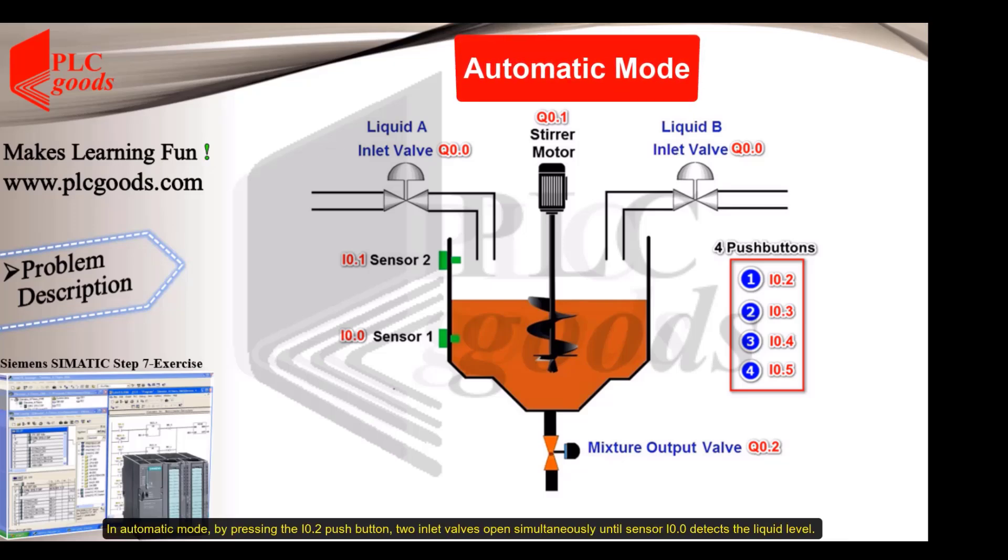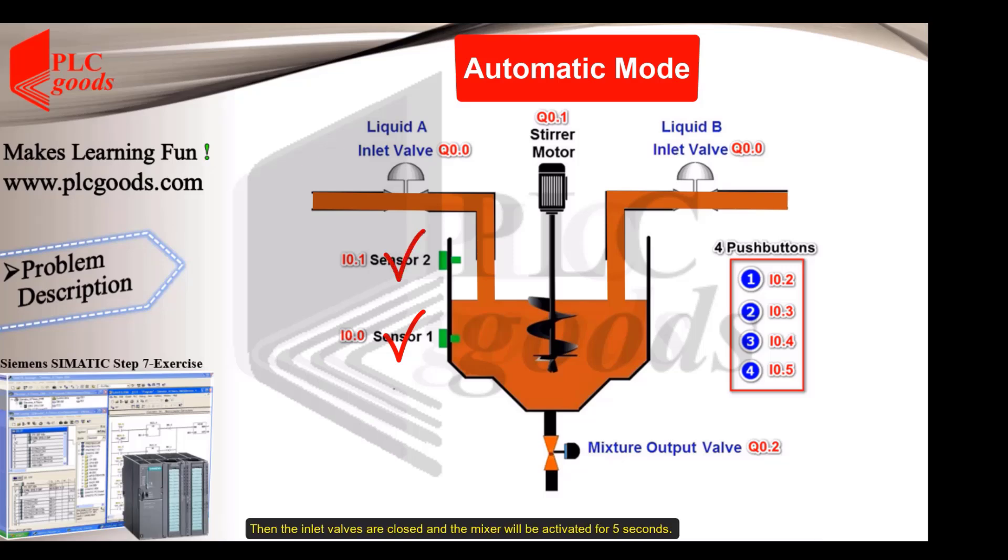In automatic mode, by pressing the IO2 push button, two inlet valves open simultaneously until sensor I0.0 detects the liquid level. Then the inlet valves are closed and the mixer will be activated for five seconds. At the end of five seconds, the mixer will turn off and the output valve will open.